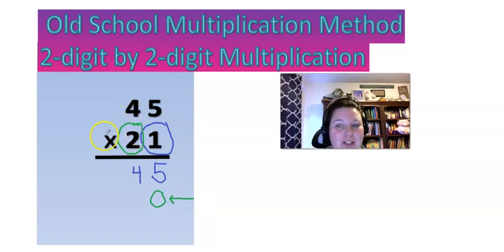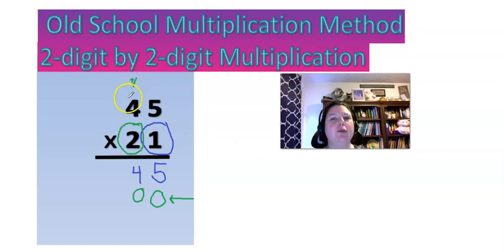Okay, now we can multiply. Two times five equals ten. Put the zero down below and the one up top and add that one, just like if I was regrouping in addition. So now two times four is eight plus one, nine.